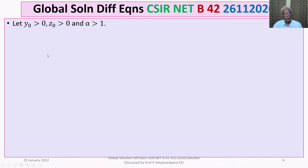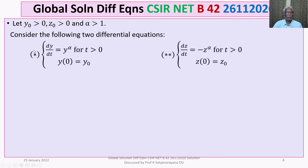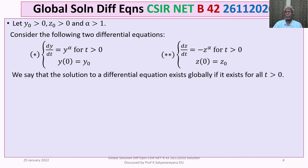The problem: let Y₀ = 0, Z₀ = 0, and Alpha > 1. The first differential equation (starred) is dy/dt = y^α for t > 0, with y(0) = y₀. The second differential equation (double-starred) is dz/dt = −z^α for t > 0, with z(0) = z₀. A solution exists globally if it exists for all t > 0. Which of the following statements is true?